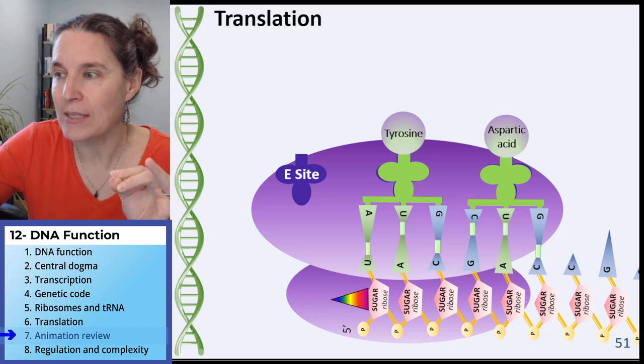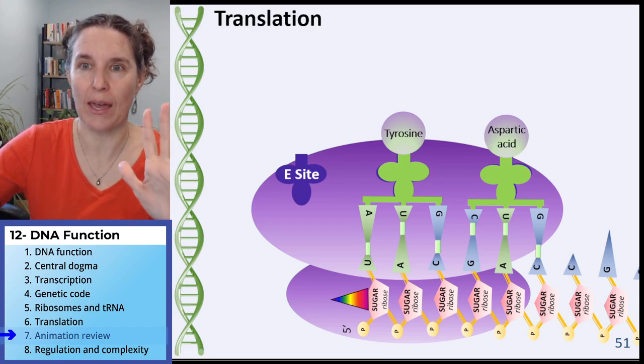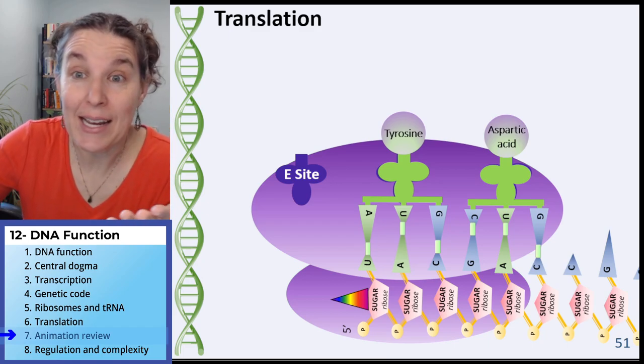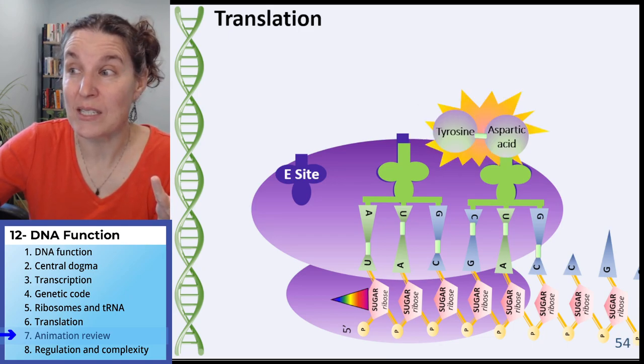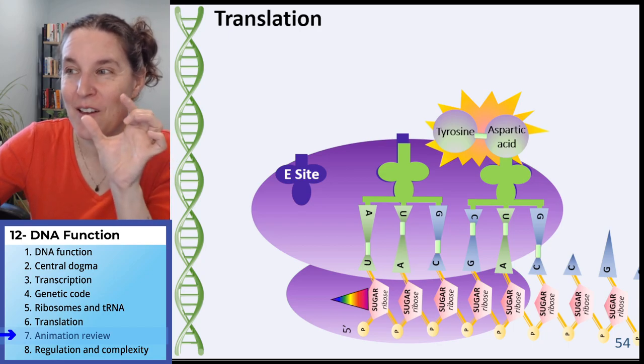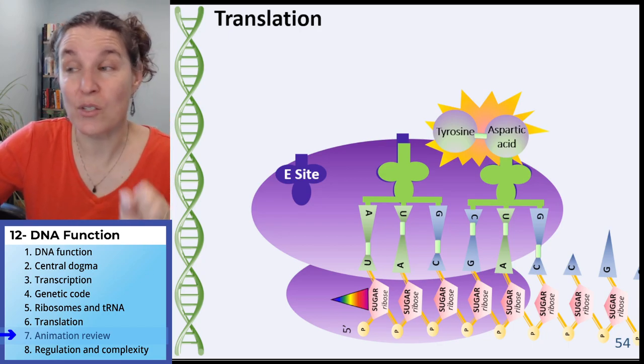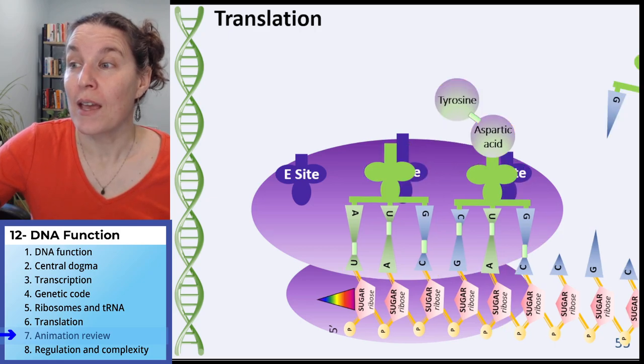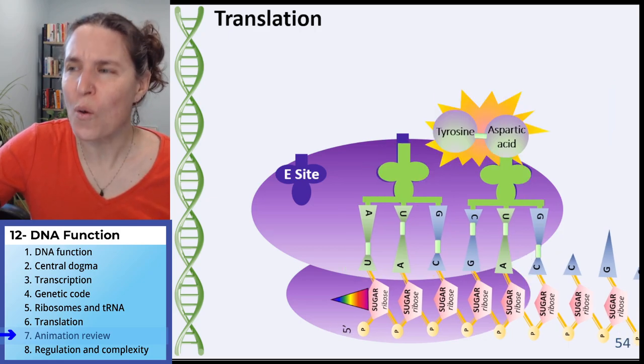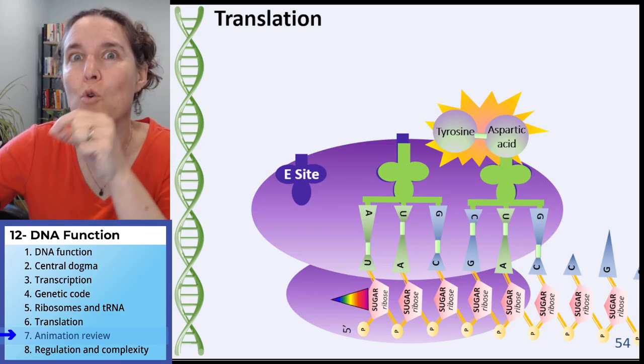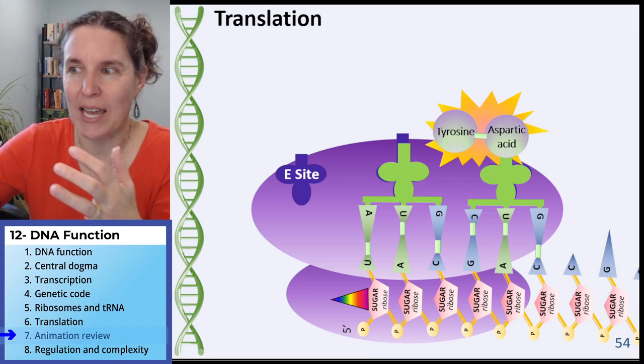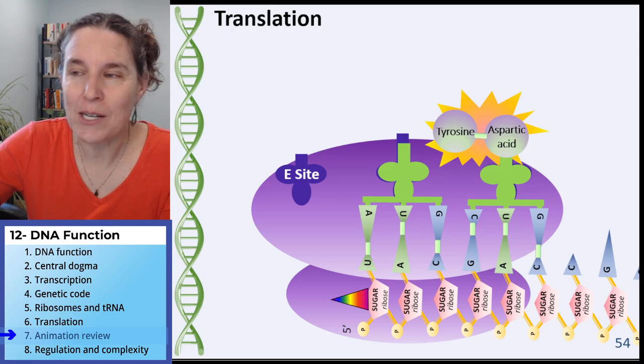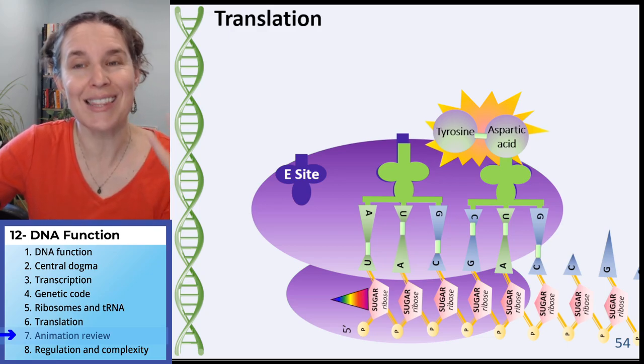We now have a tRNA in the A site and a tRNA in the P site. The next thing that happens is that the ribosome goes, okay, we got to make a connection. We're feeling the love here. Let's connect tyrosine and aspartic acid. And in fact, that's exactly what the ribosome does. It's a power connection, forms a peptide bond between those two amino acids. And then the whole thing moves. The whole thing moves because now we have a growing peptide in the A site. And the ribosome is like, you're in the wrong spot. You have to be in the P site.